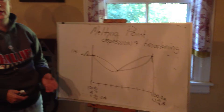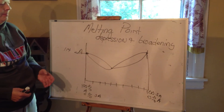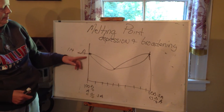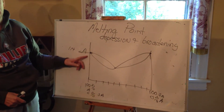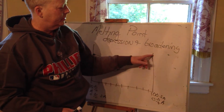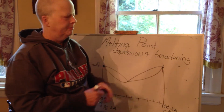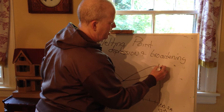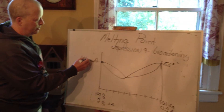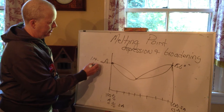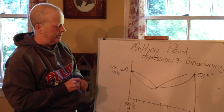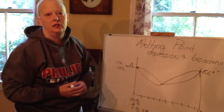This is a diagram called a melting point diagram. This side of the diagram represents, for example, the melting point of pure A or pure acetanilide. And this side of the diagram represents the melting point of pure salicylic acid, which melts at about 156 degrees. Acetanilide melts between 114 and 116 degrees Celsius — maybe a little higher. In between are different combinations.